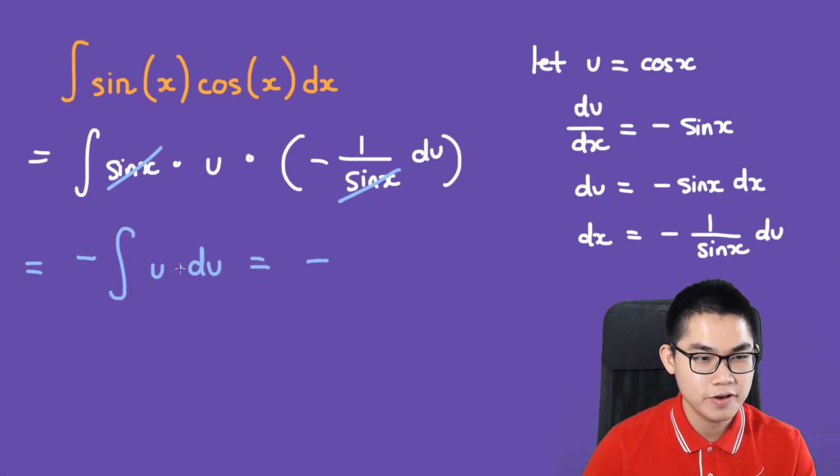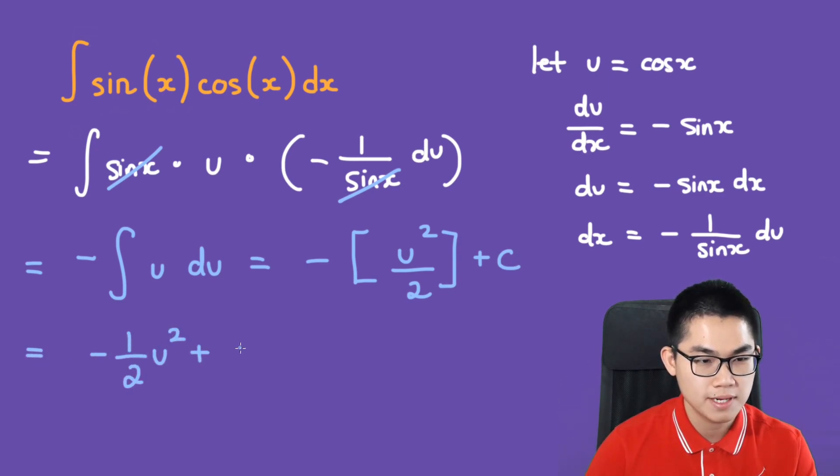And what is the antiderivative of u? Well, it's going to be u to the power of 2 over 2 plus C. So this will give us negative 1 over 2 times u to the power of 2 plus C.